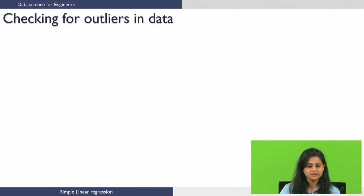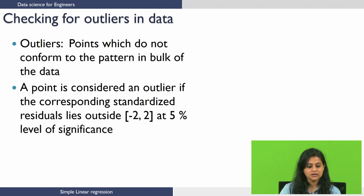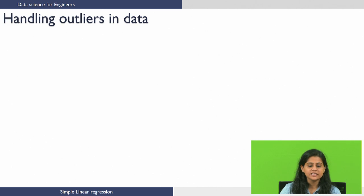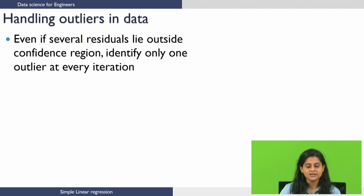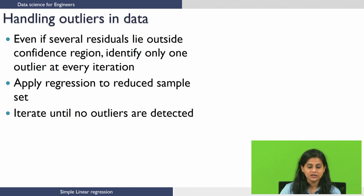Outliers are points which do not conform to the bulk of the data. A point is considered an outlier if the corresponding standardized residual falls outside minus 2 and plus 2 at a 5 percent significance level. To handle these outliers, even if we have several outliers which lie outside the confidence region, we are going to identify only one at a time at every iteration, and after doing so, we are going to apply a linear model on the reduced sample. We iterate until we detect no more outliers.